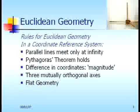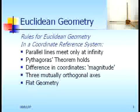First of all, Euclidean geometry. The rules for Euclidean geometry in a coordinate reference system are as follows: firstly, the parallel lines meet only at infinity; Pythagoras theorem holds wherein the sum of the squares of the sides of a right triangle is equal to the square of the side of the hypotenuse; the difference in coordinates is what we call the magnitude; and it has three mutually orthogonal axes. Lastly, this kind of geometry is called a flat geometry.